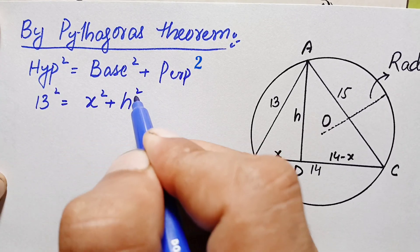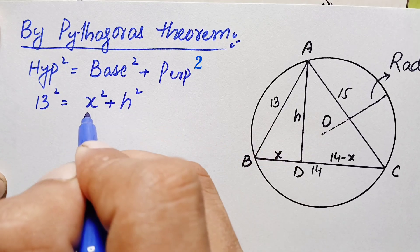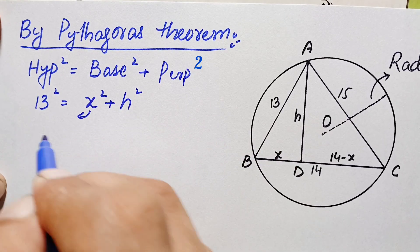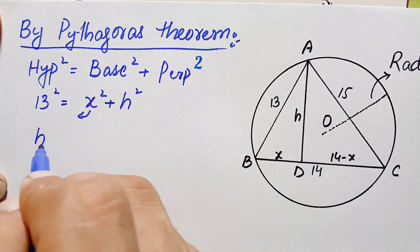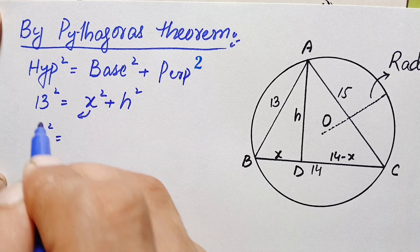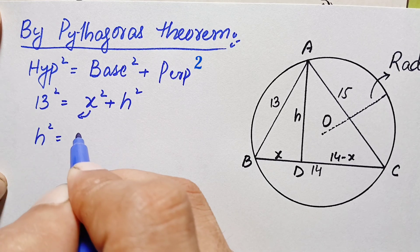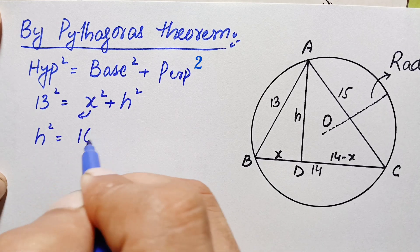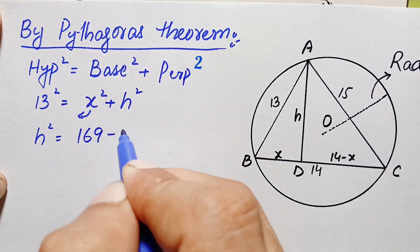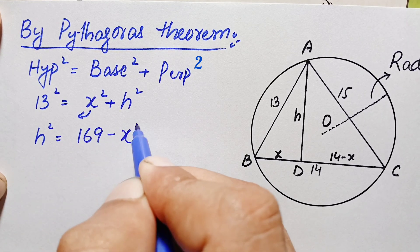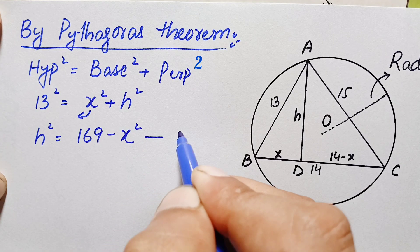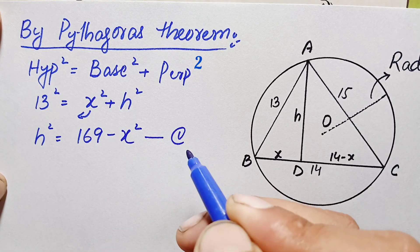Taking x² to the left hand side, h² becomes 169 minus x². Let us call this equation number one.